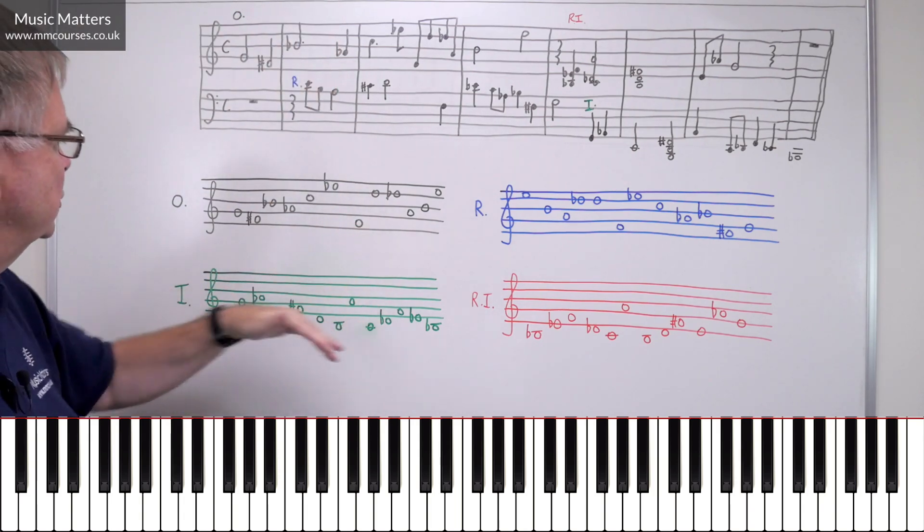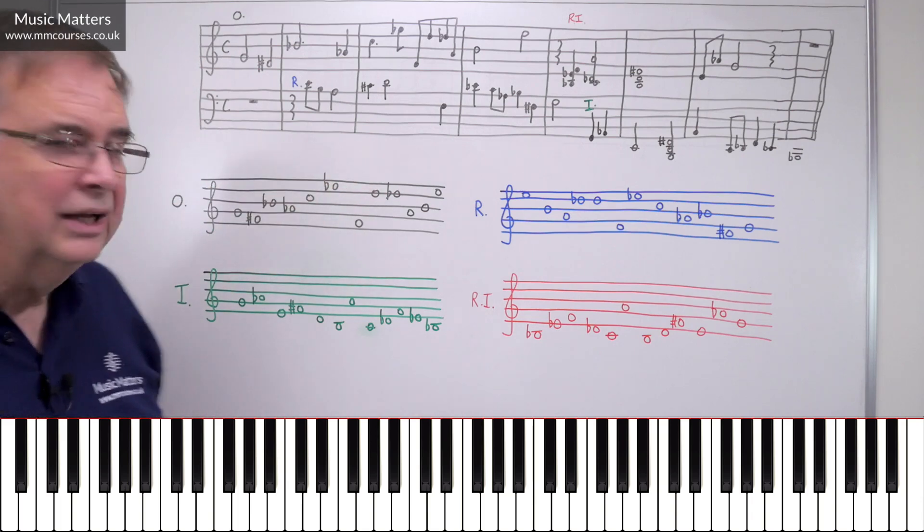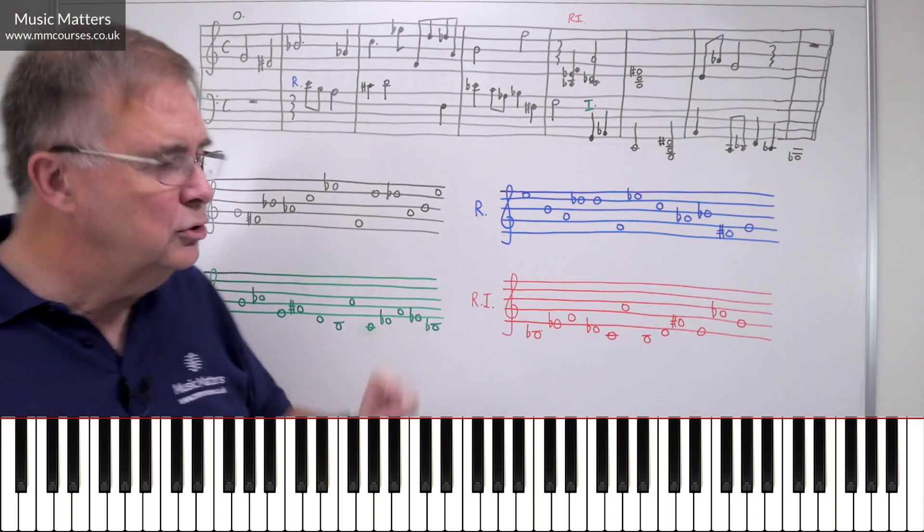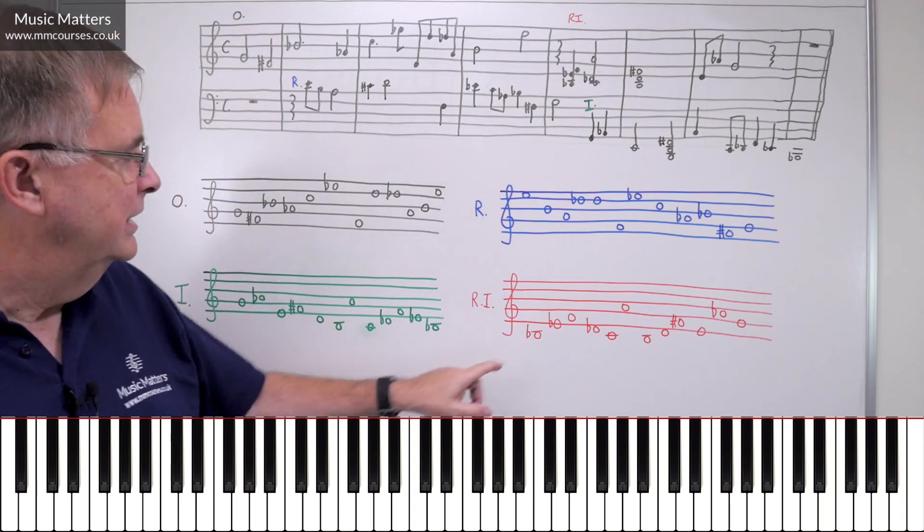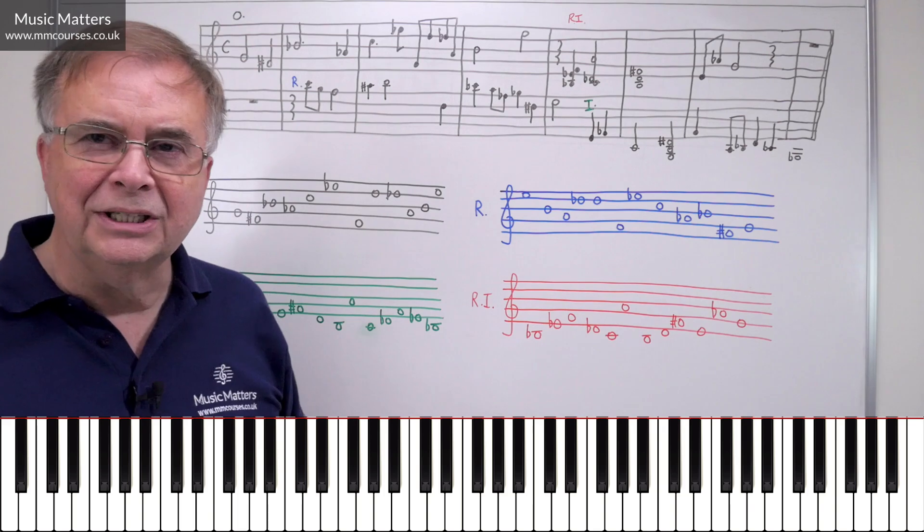So this is the inversion of the original row. And then you can also do retrograde inversion. So that's backwards and upside down. So that's what the red version is.